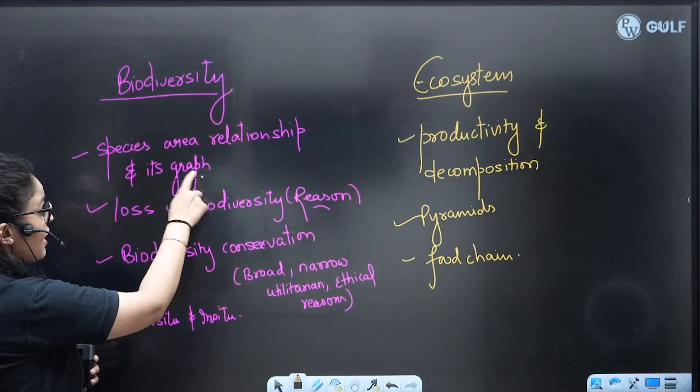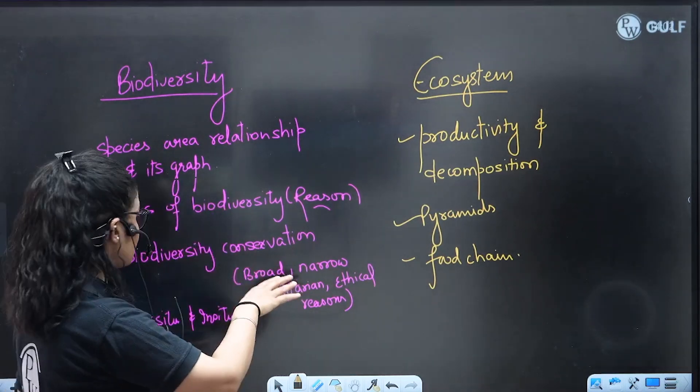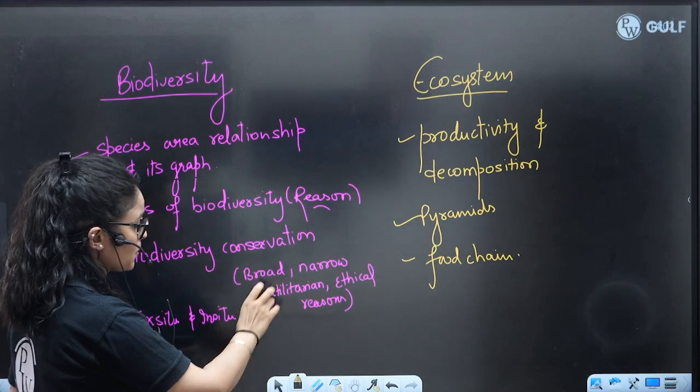Biodiversity: the graph species-area relationship and its graph is important. Loss of biodiversity with reasons, biodiversity conservation - broad, narrow, utilitarian, ethical reasons.